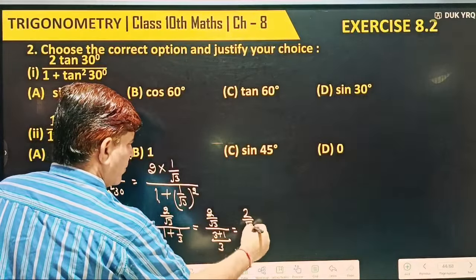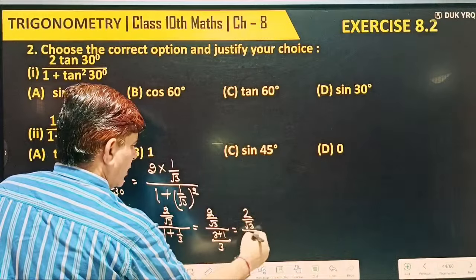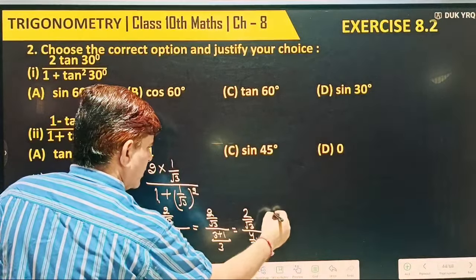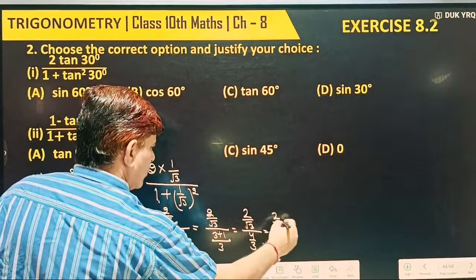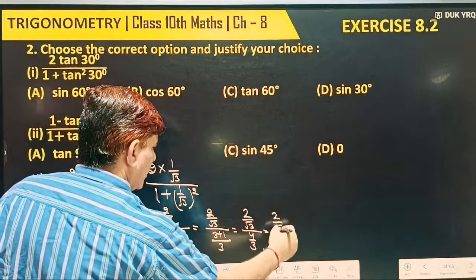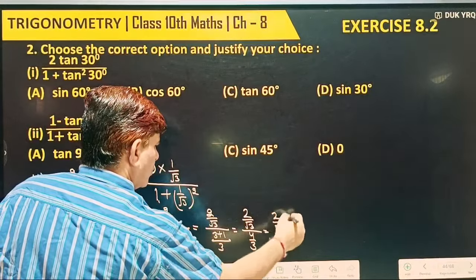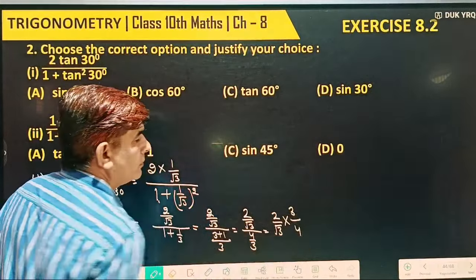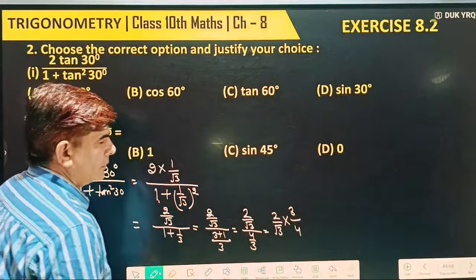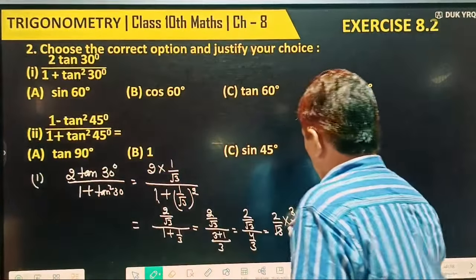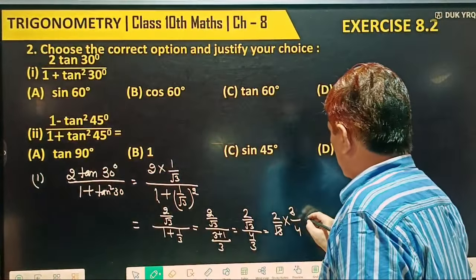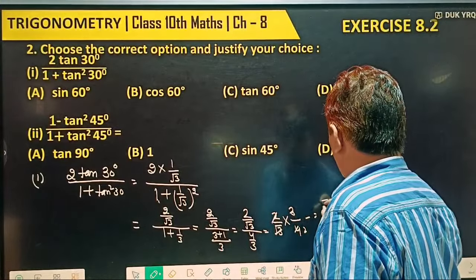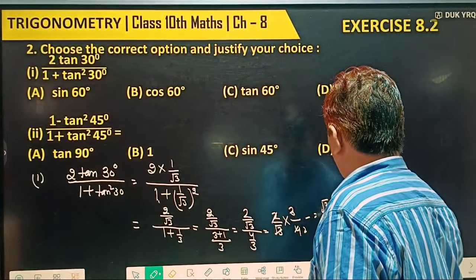So we have 2 by root 3 divided by 4 by 3. We can write this as 2 by root 3 into 3 by 4. Cancel the 3s, and it comes out to root 3 by 2.